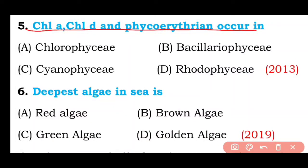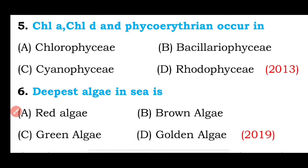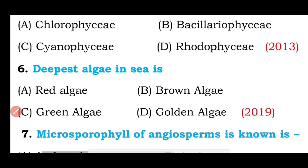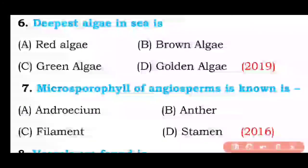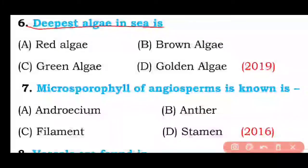Question number five: Chlorophyll a, chlorophyll d, and phycoerythrin pigments occur in Chlorophyceae, Bacillariophyceae, Cyanophyceae, or Rhodophyta? The correct answer is option D — Rhodophyta (red algae) have chlorophyll a, chlorophyll d, and phycoerythrin pigments.